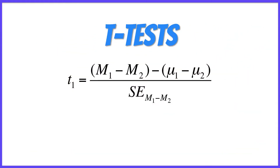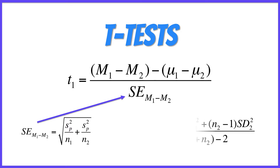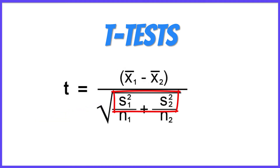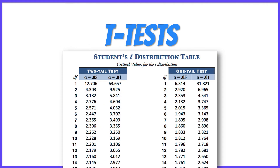When you do a t-test with raw data, you use formulas like this. But you can accomplish the same thing with this formula. The s-squared is the variance, which is the standard deviation squared. If you have the mean, standard deviation, and size of each sample, plug into the formula. You will get a t-value that you can look up in a t-table to determine if it is statistically significant.